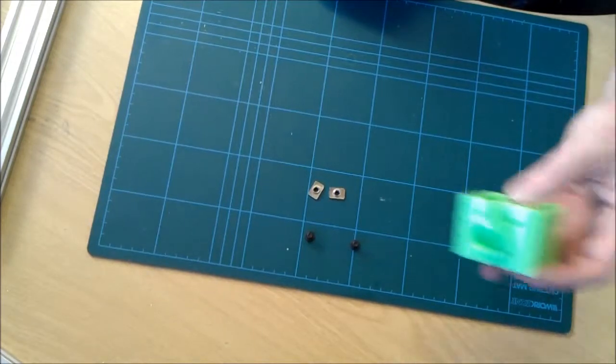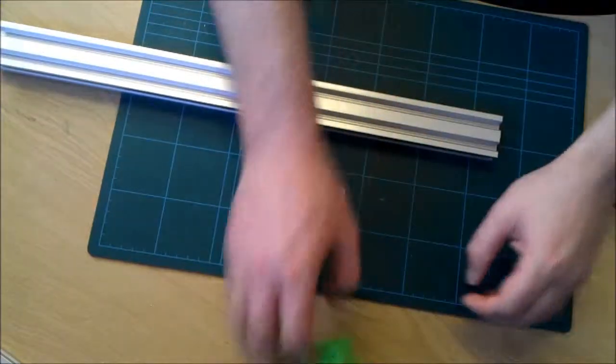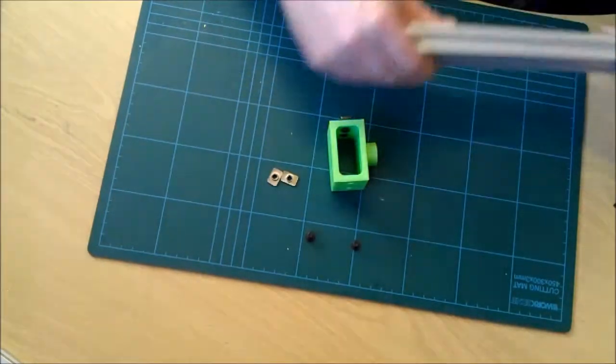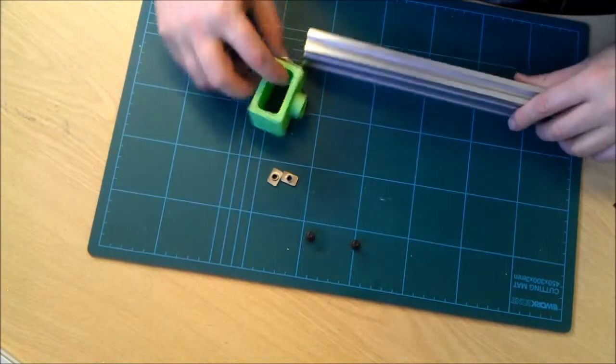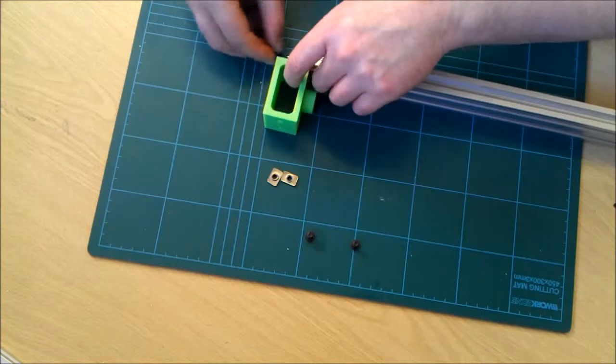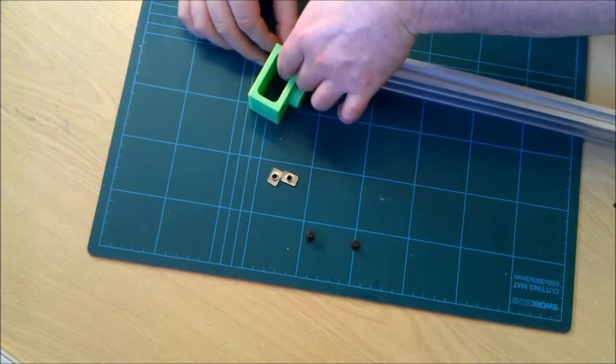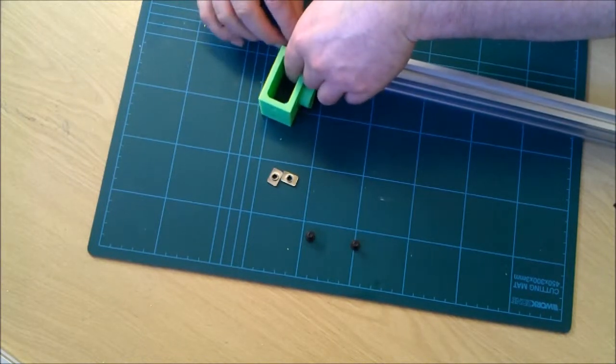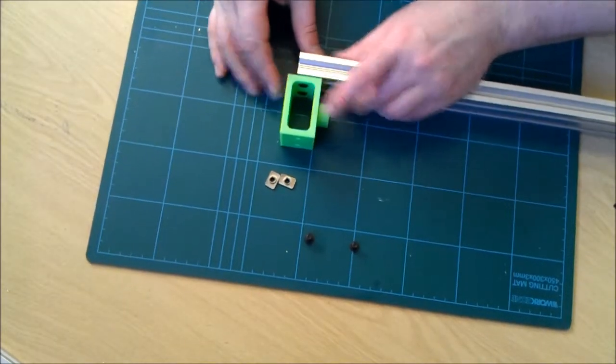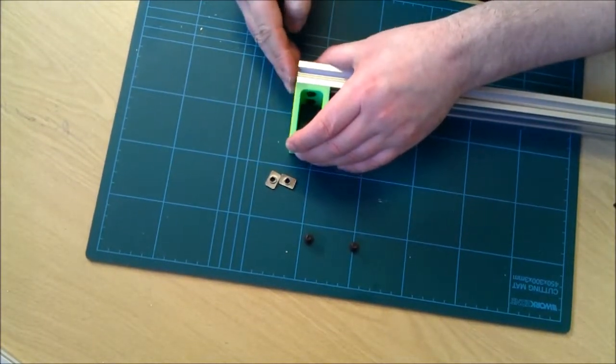Right, now you want a bit of length. Now we're going to take a section of this V-slot. Place that down on the bolt on the surface. Take a section of your V-slot and slide the nuts into the V-slot. Okay, push.